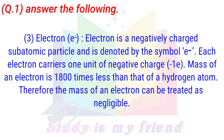Electron: An electron is a negatively charged subatomic particle, denoted by the symbol E⁻. Each electron carries one unit of negative charge (−1e). The mass of an electron is 1800 times less than that of a hydrogen atom; therefore, the mass of an electron can be treated as negligible.